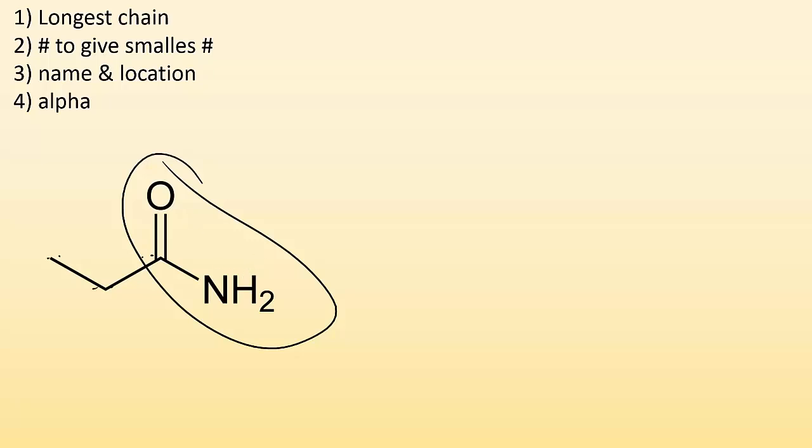How do I name it? Well, I got one, two, three, four carbons. So, it's going to be but, single bond, and amide. And the only place that you can have an amide, the double bond O with an amine group on it, is on the end. So, you don't need a number.